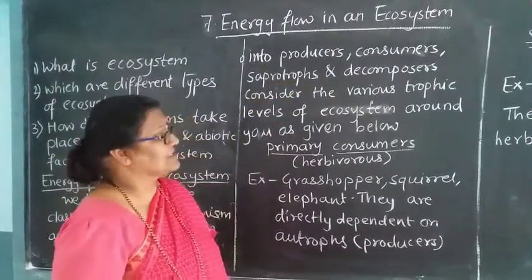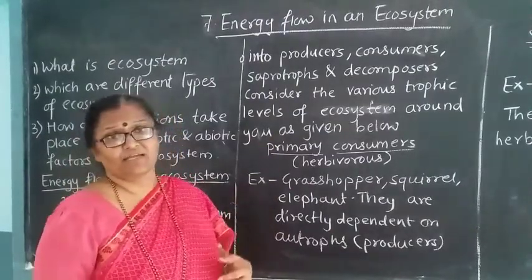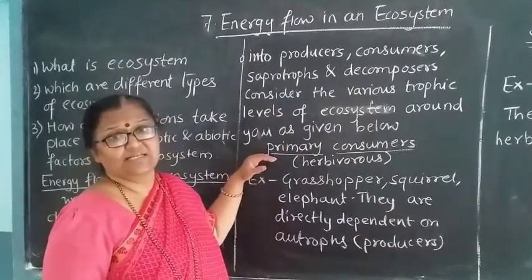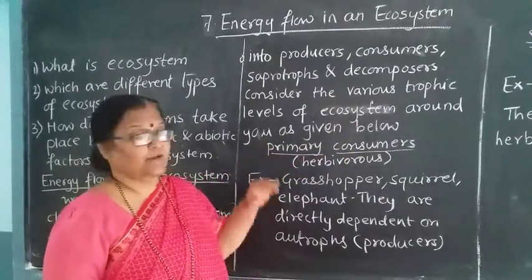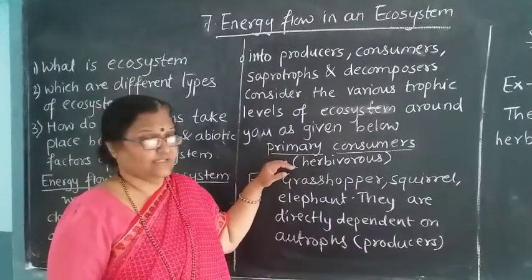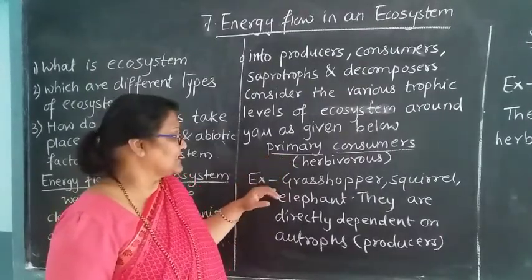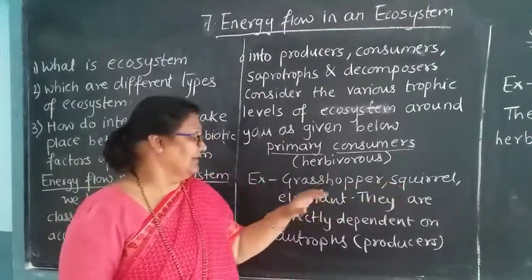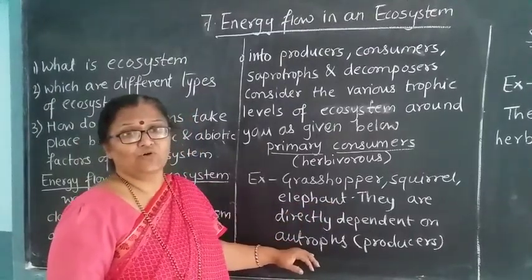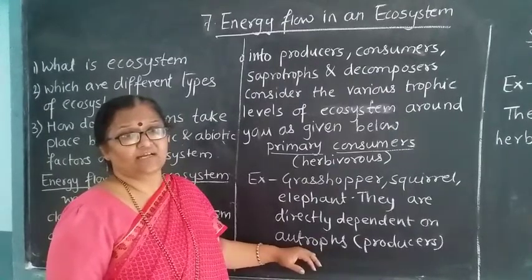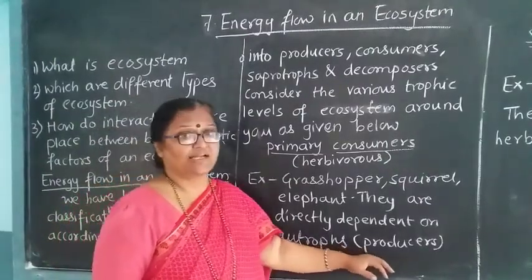Considering the various trophic levels of the ecosystem, the first are primary consumers, also called herbivores. We call them herbivores because they are eating herbs or plants. For example, grasshopper, squirrel, elephant — they are directly depending on the autotrophs. Autotrophs are organisms who prepare their own food. All plants are autotrophs and they are called the producers.